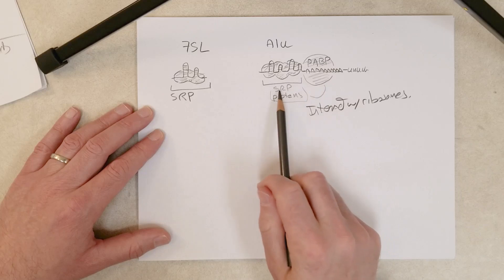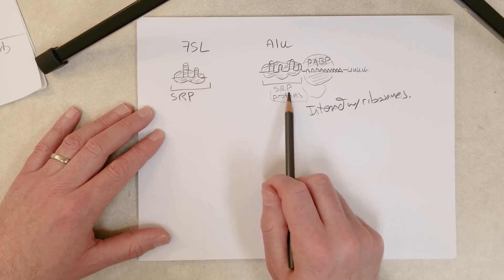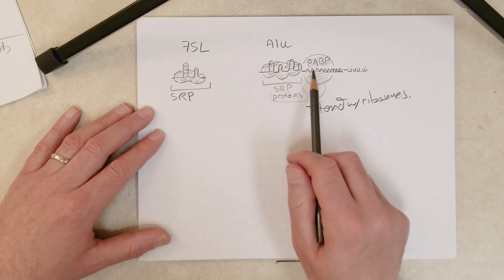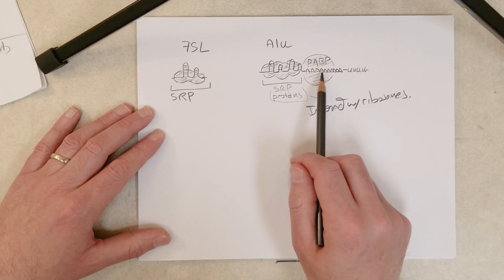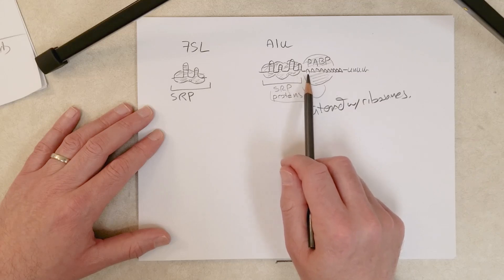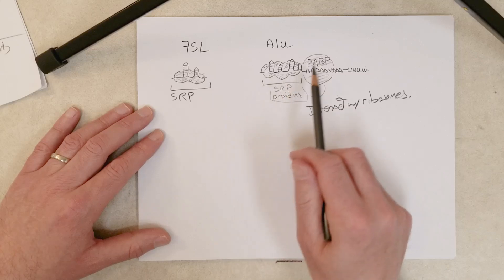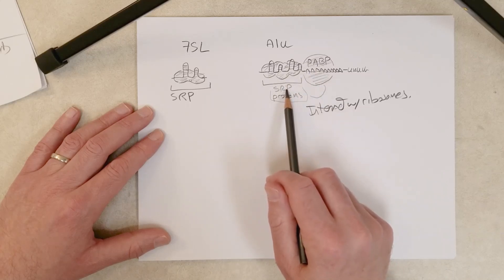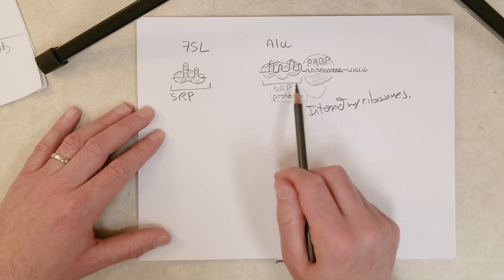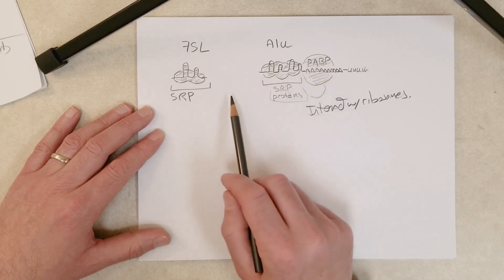You need the SRP next to the ribosome to recognize those proteins that are being translated or produced by the ribosome so the proteins can be transported to their correct locations in the cell right after production. The poly-A binding protein normally interacts with ribosomes too because it's involved with binding to the poly-A tail of messenger RNAs and helping transport those messenger RNAs to the ribosomes. You've got two proteins or protein complexes that interact with the ribosomes also interacting with this ALU RNA, helping bring it to the ribosome.